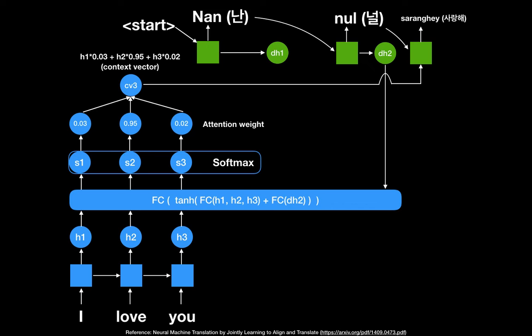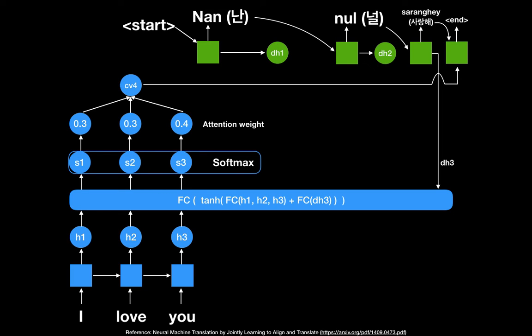For the third step, dh2 goes to the fully connected network with h1, h2, h3 again. The softmax attention weights are now 0.95 for 'love,' 0.03 for 'I,' and 0.02 for 'you,' so the third context vector focuses heavily on 'love.' This context vector and the previous output 'nul' go into the third decoder RNN cell, which outputs 'saranghae' and then the end signal. So the full decoder output is 'nan nul saranghae' — perfectly translated. This is how the sequence-to-sequence model with attention mechanism works.